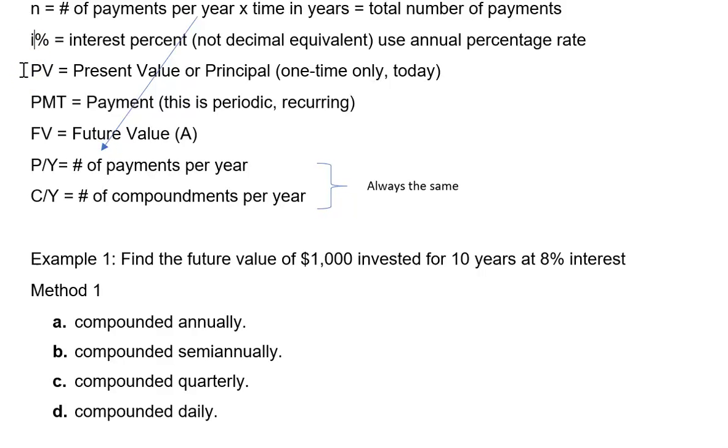PV represents present value or principal. This is a one-time only deposit or withdraw and you could think of it as occurring today. The next value PMT is the payment. This is a regularly occurring or periodic payment so it happens more than once, which if we're talking about a one-time only thing that would be the principal or present value. FV represents future value and I already discussed our P/Y, C/Y.